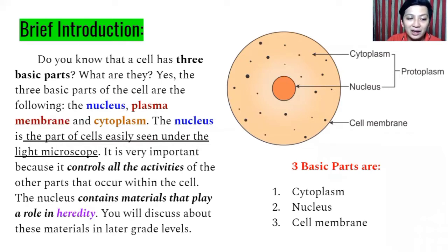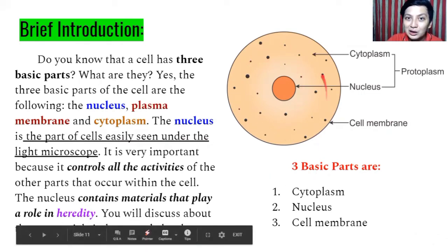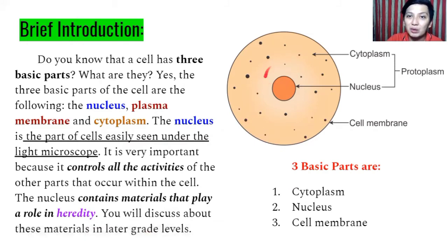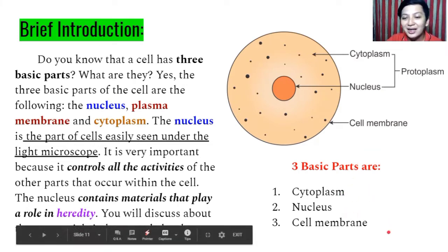The nucleus contains material that plays a role in heredity — the things we got from our parents, like our appearance and traits. A gel-like fluid inside the cell is what we call cytoplasm. The circular center of the cell is the nucleus. The covering is what we call cell membrane. The combination of cytoplasm and nucleus is called protoplasm. So the three basic parts are cytoplasm, nucleus, and cell membrane.